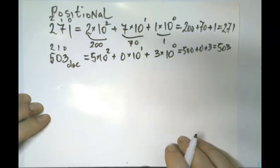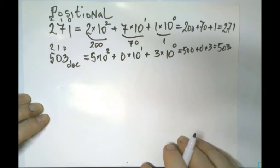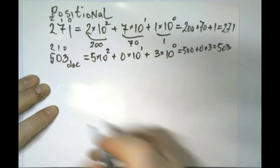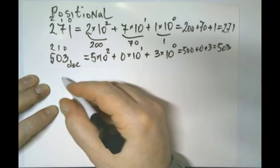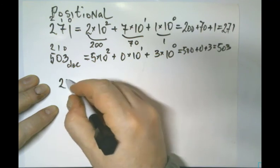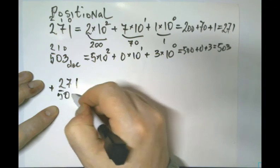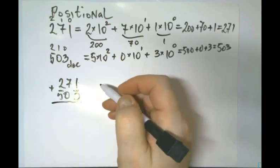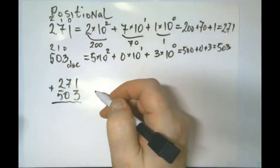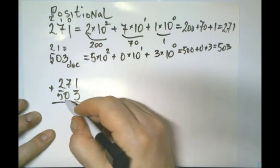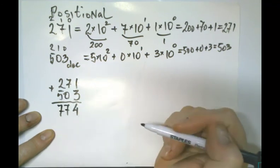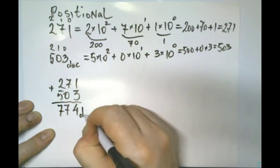Why is this system pretty positive and useful? Because when you calculate, it is possible to make all four arithmetical operations. Take a look — addition. We need to put position under position. Let's go: 271 plus 503. That will be 1 + 3 = 4, 7 + 0 = 7, and 2 + 5 = 7. So that will be 774 in decimal system.